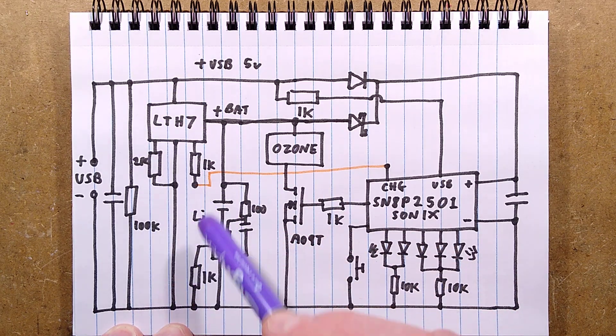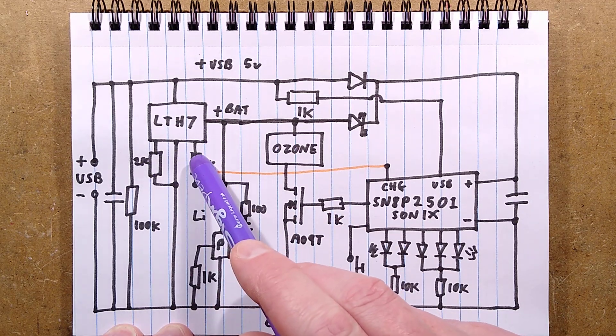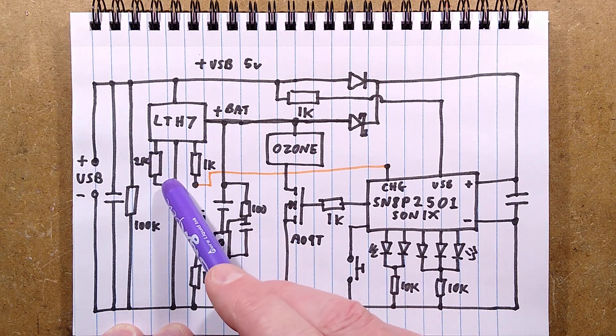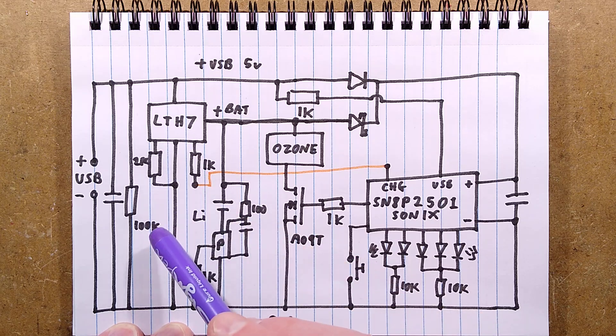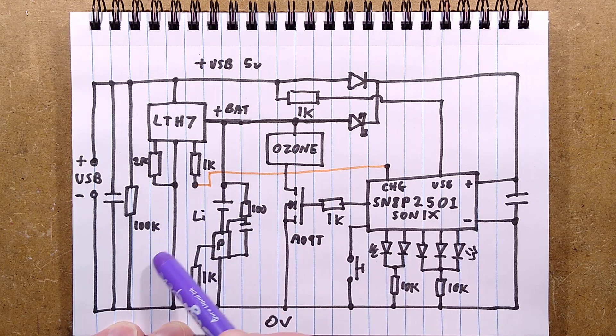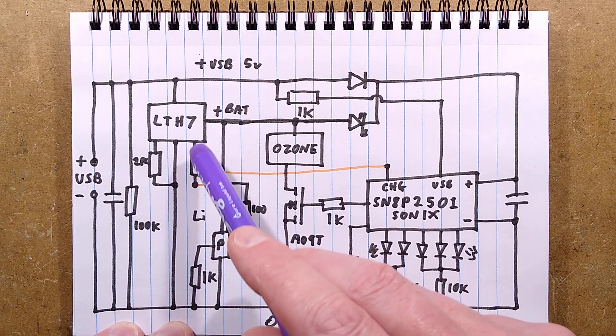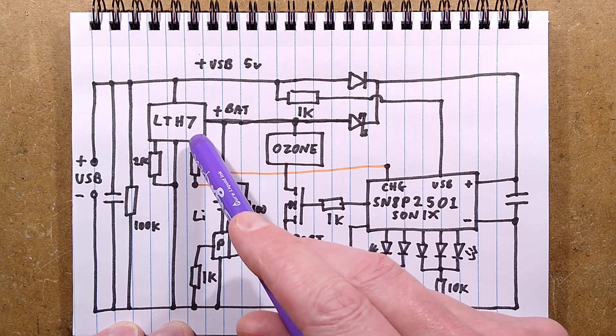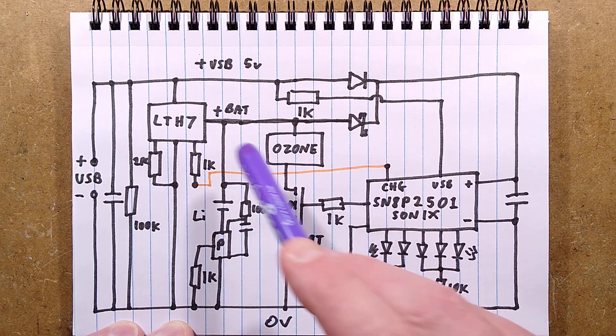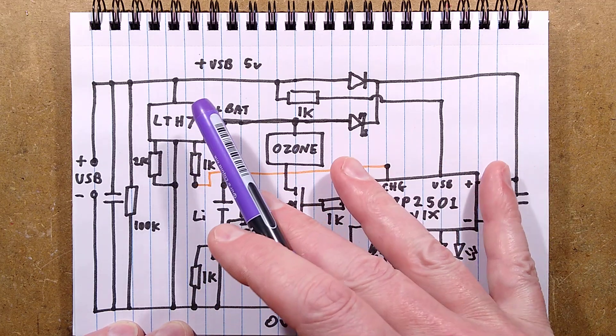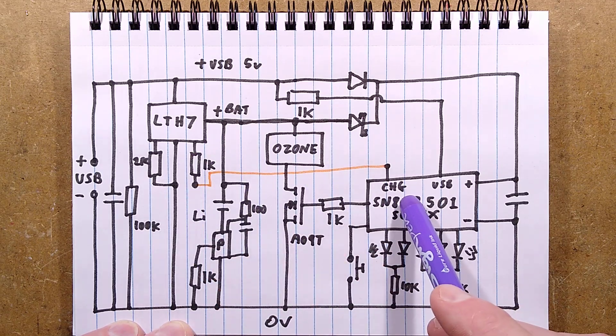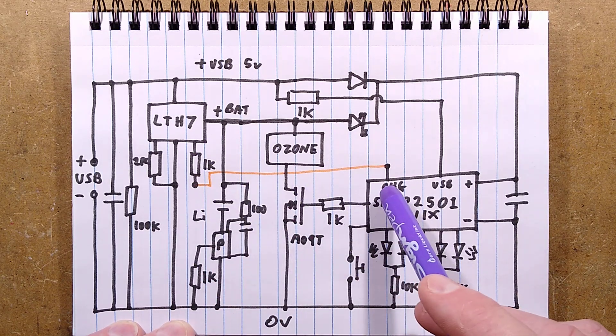It goes to the LTH7 charge controller, which then goes to the battery. And it has two resistors associated with it. The 2k resistor sets the current at which it's going to charge. In this case, it's 500mA, which is quite decent.